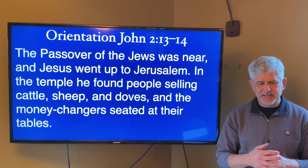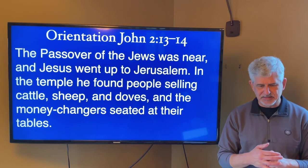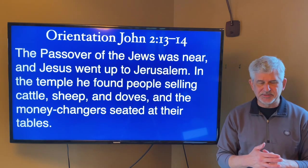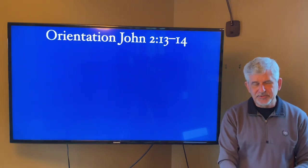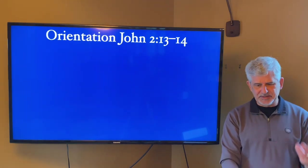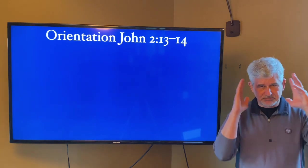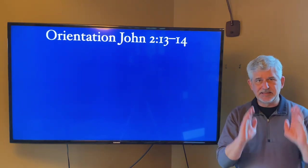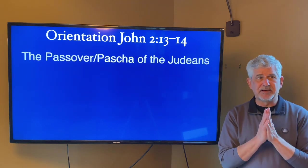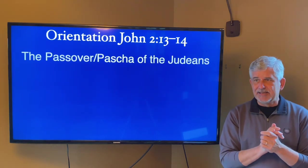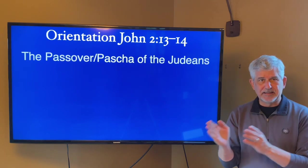Let's start with the orientation, which is verses 13 and 14 of John chapter 2: 'The Passover of the Jews was near, and Jesus went up to Jerusalem. In the temple, he found people selling cattle, sheep, and doves, and the money changers seated at their table.' The very first thing to pay attention to is time and place — we're talking about the Passover.